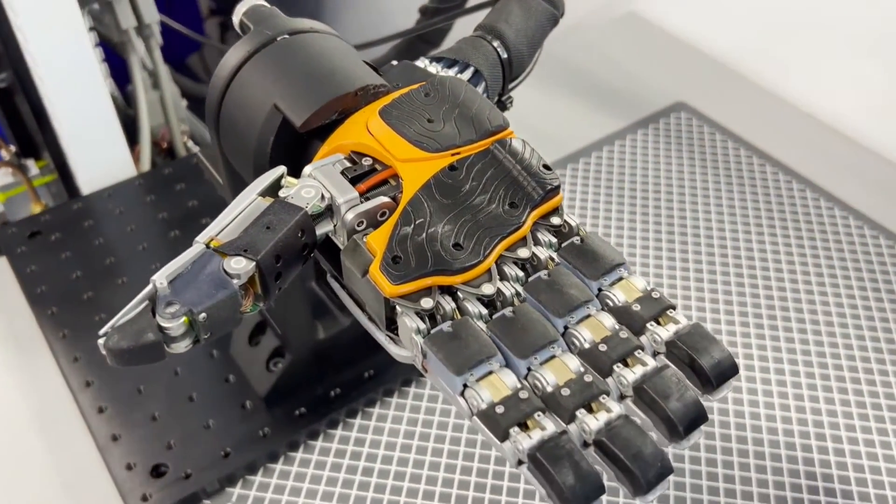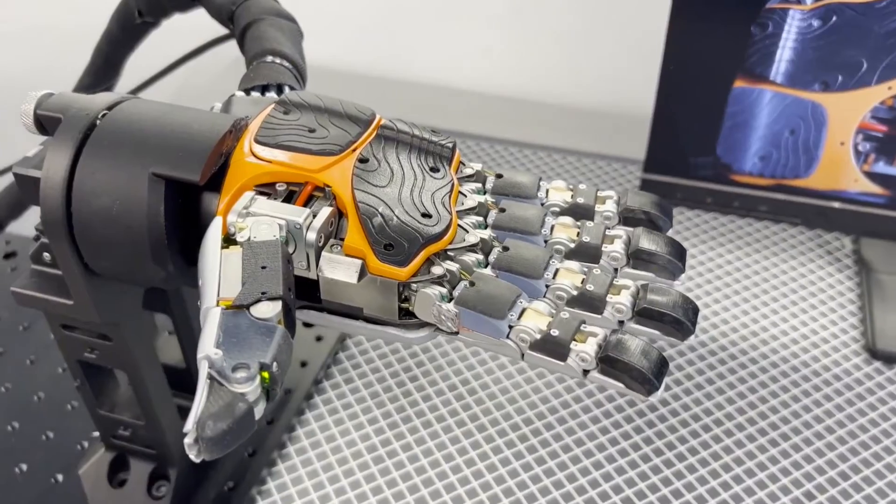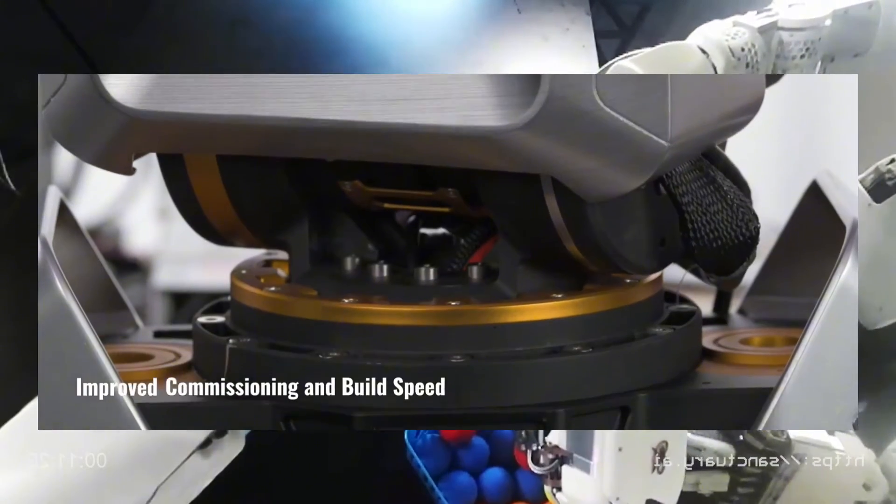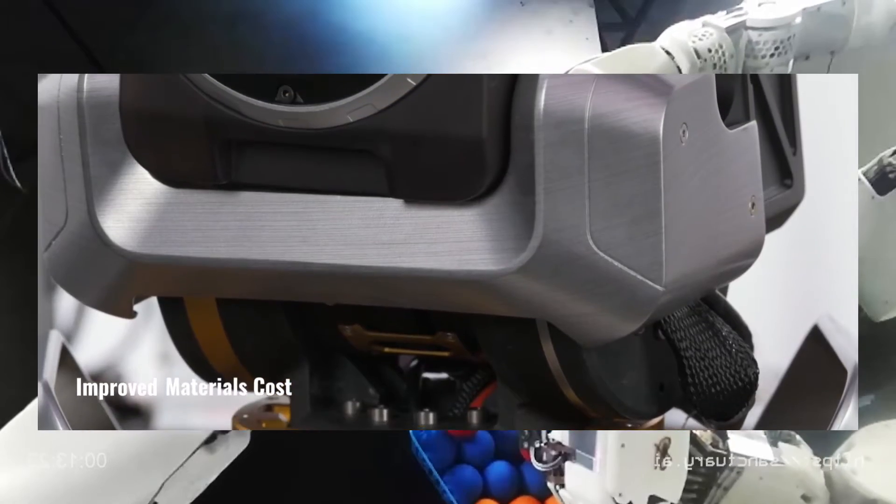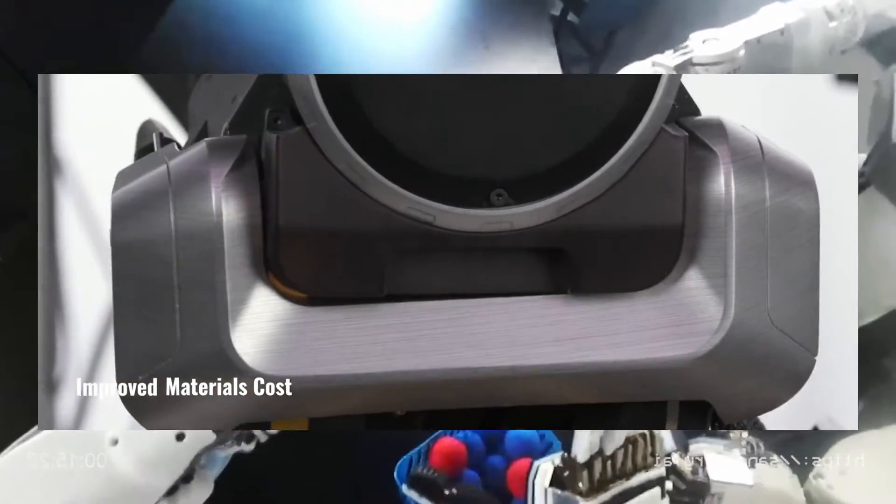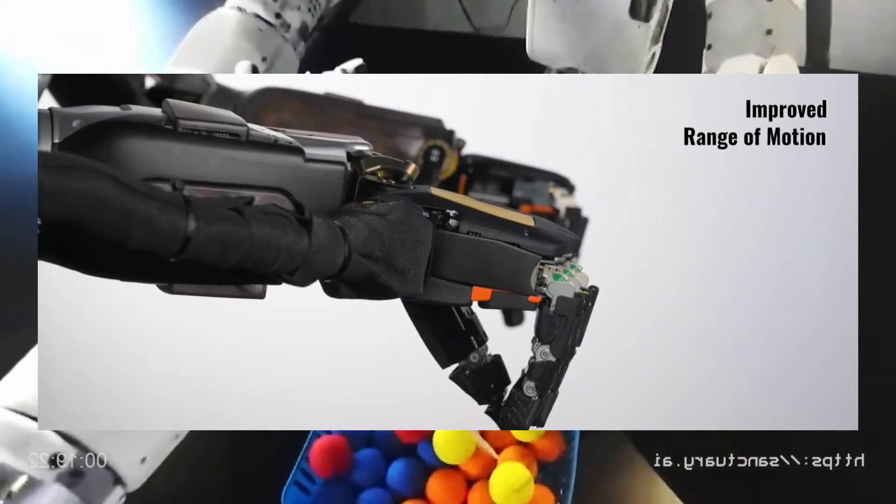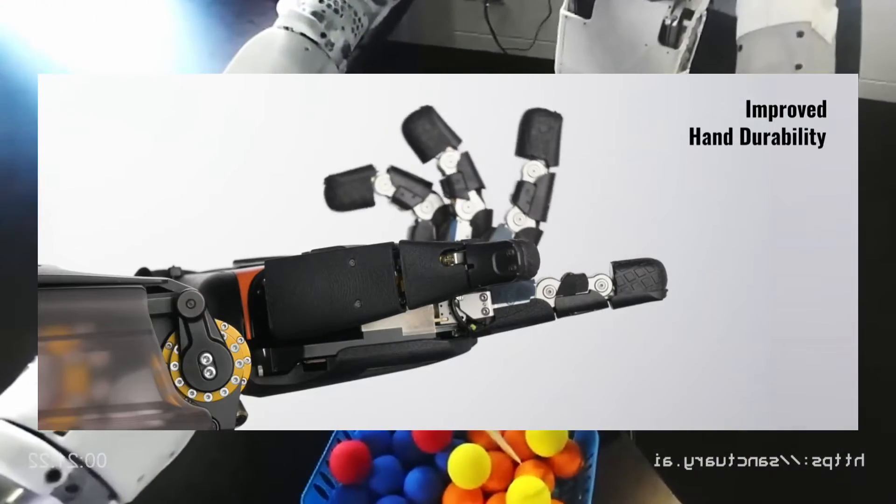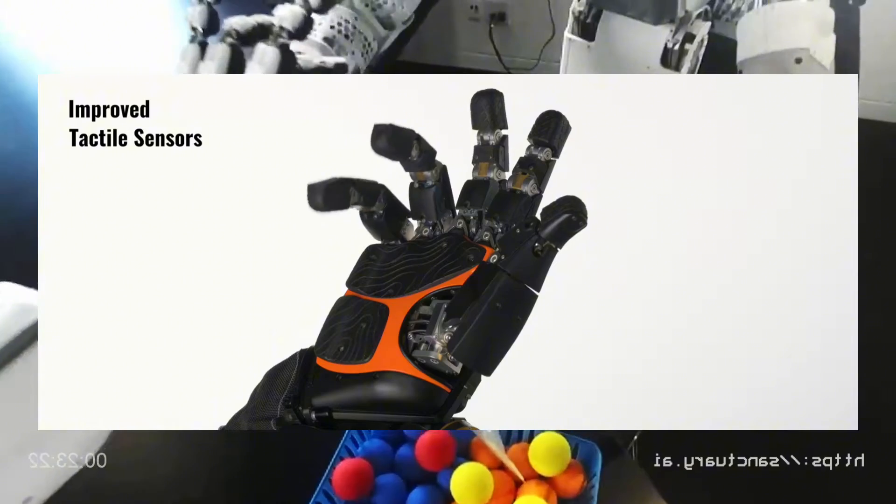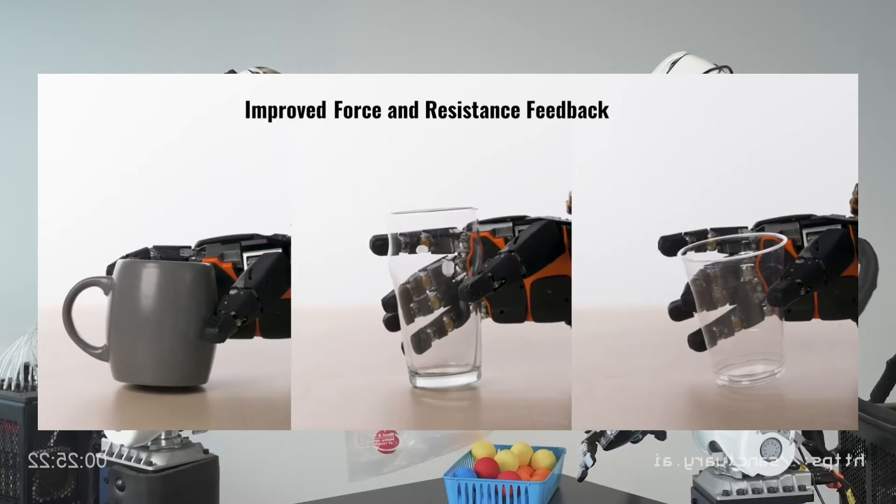Now, it's important to remember that there are limitations. The tasks shown in their demos might be on the simpler side, sorting objects based on color in a controlled environment. But that doesn't diminish the achievement. Sanctuary has already deployed previous versions of Phoenix in real-world applications, and they recently announced a partnership to bring their robots to Magna auto manufacturing facilities.